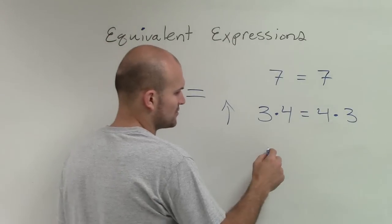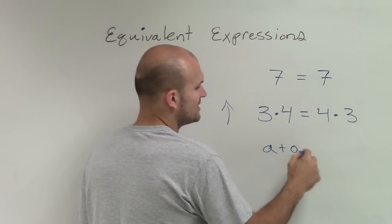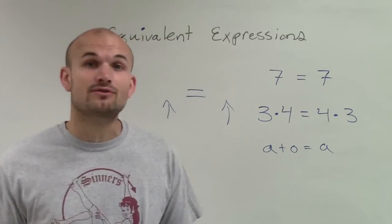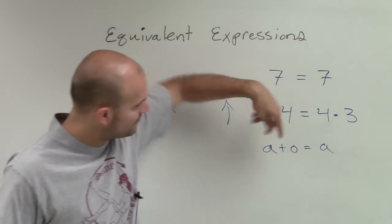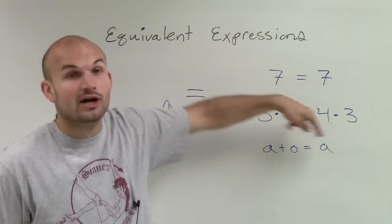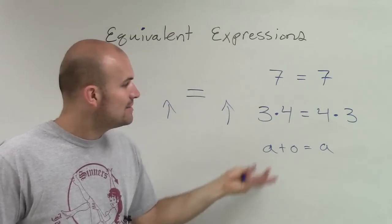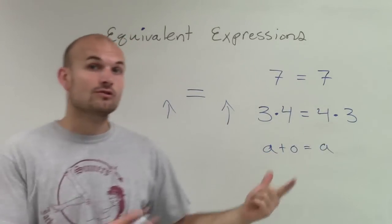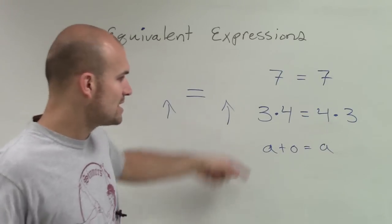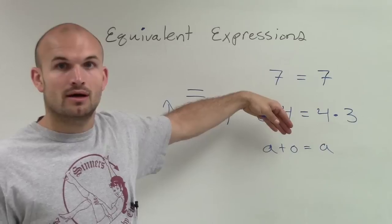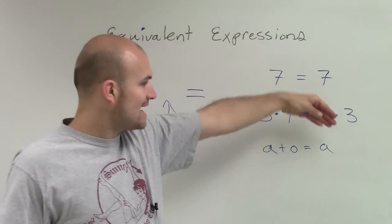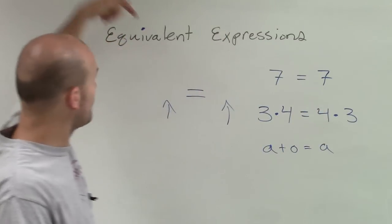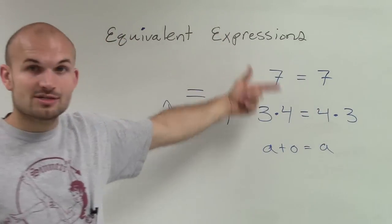What else have we talked about so far? We said a plus 0 was equal to a, where a represents any real number. They have to be exactly the same. So we said that a plus 0 equals a. Now I know they don't look the same, but what we talked about was the value of both sides of this equation are exactly the same. Therefore, they are equivalent expressions.